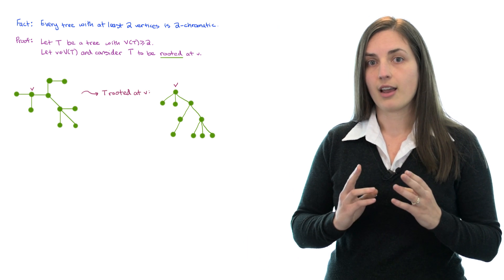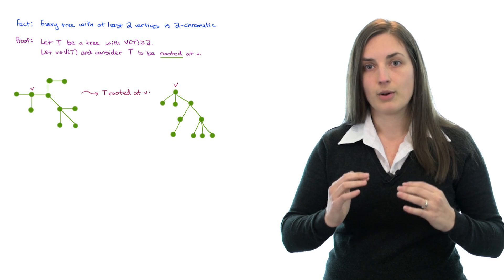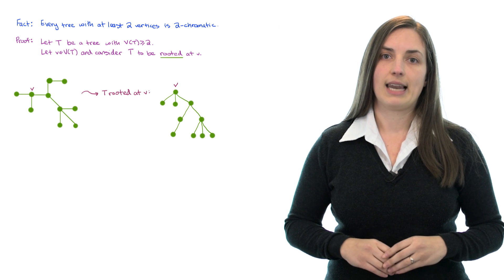Visually, you can think about holding onto the vertex V and letting the rest of everything else dangle below. Now we can really think about our tree in terms of V, and then what's below it, and we can sort of layer our tree in levels.